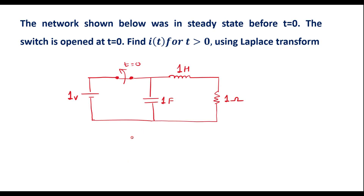In this video, let me consider one numerical on Laplace transform. The network shown below was in steady state before t equal to 0. The switch is opened at t equal to 0. Find i of t for t greater than 0 using Laplace transform.